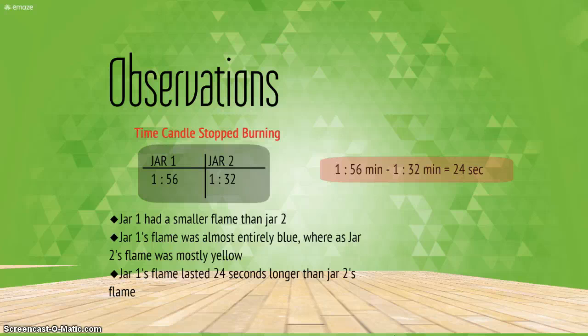So, jar one had a smaller flame than jar two. But, jar one's flame was almost entirely blue. Whereas, jar two's flame was mostly yellow and kind of orange. And, jar one's flame lasted 24 seconds longer.